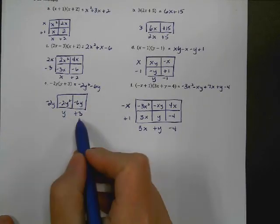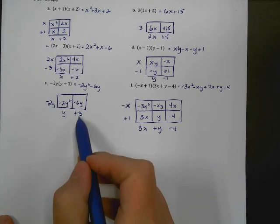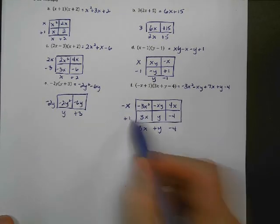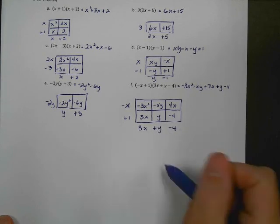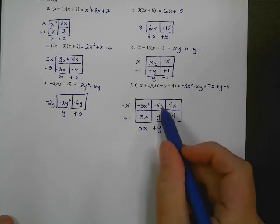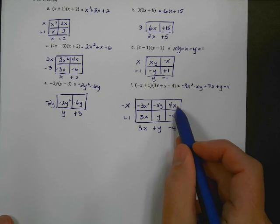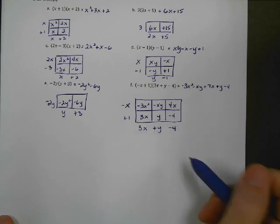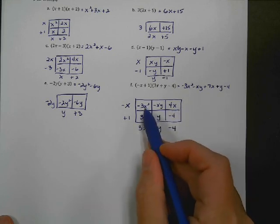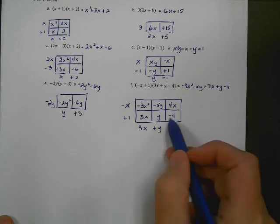Here we have a monomial times a binomial: negative 2Y times Y is negative 2Y squared, and negative 2Y times 3 is negative 6Y. Those are not like terms, so the answer is negative 2Y squared minus 6Y. Last one: negative X plus 1 times 3X plus Y minus 4. That gives negative 3X squared, 3X, negative XY, Y, positive 4X, and negative 4. Like terms: 3X plus 4X is 7X. Final answer: negative 3X squared minus XY plus 7X plus Y minus 4.